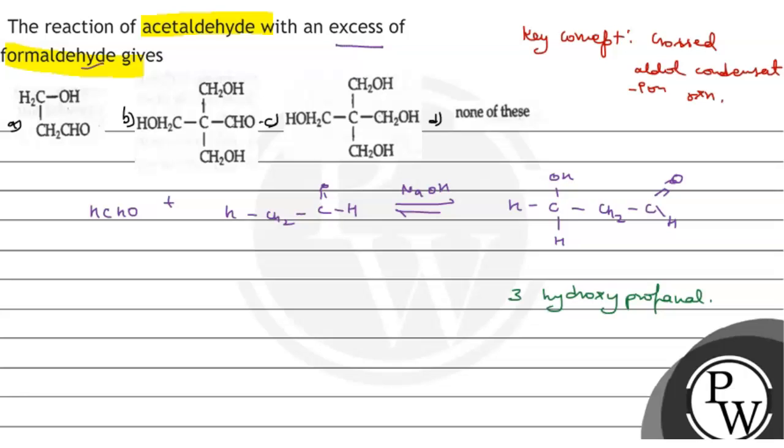So when it reacts with excess of formaldehyde, right, we can say let's say 3 HCHO reacts with acetaldehyde. It has total number of alpha hydrogens, that is three, so these three alpha hydrogens will be removed by this molecule of formaldehyde.